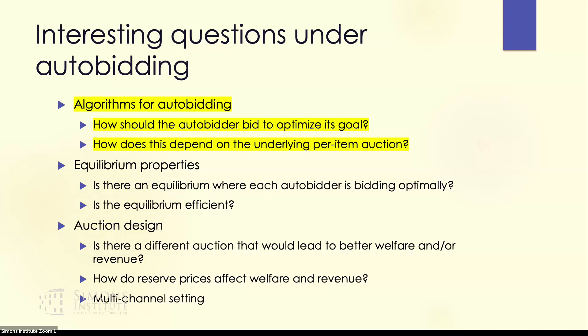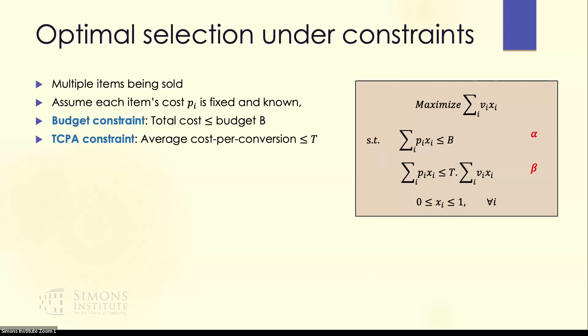The first topic I'll talk about is algorithms for auto-bidding. The problem is as follows: we are looking at the point of view of the auto-bidding system. It has received some goals and constraints and wants to maximize the objective function subject to those constraints. It essentially has multiple items it can buy. To begin with, we'll assume these items have a fixed price — item i has a price of p_i. We'll also assume there's a budget constraint and a tCPA constraint, which is an average cost per conversion constraint. This problem can be represented as an integer program, and I have shown the LP relaxation on the right. We can solve this LP, and that will solve the item selection problem for us.